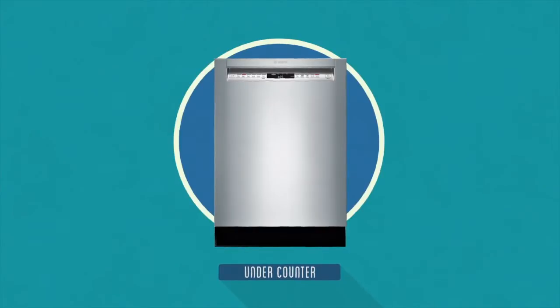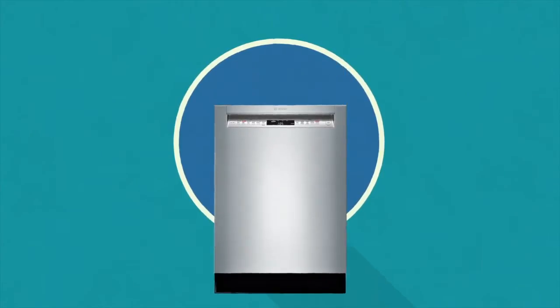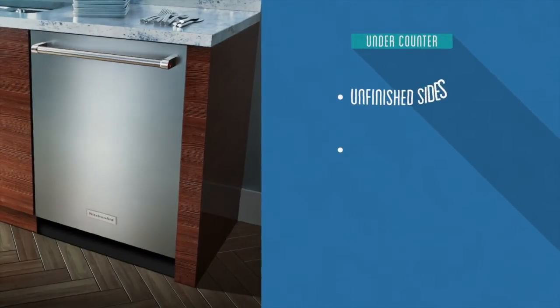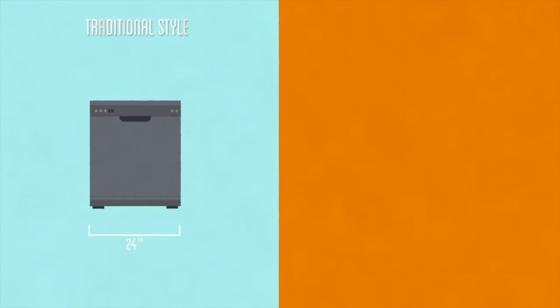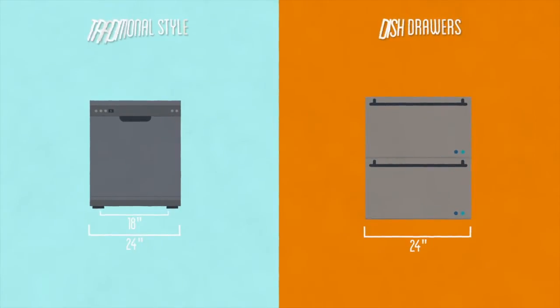Undercounter dishwashers are the most traditional type of dishwasher. They have unfinished sides, are designed to be installed under a countertop and can be ordered two ways. Traditional style which comes in two sizes, 24 inch full size and 18 inch compact, and dish drawers, which can be purchased as a 24 inch wide double or single unit.